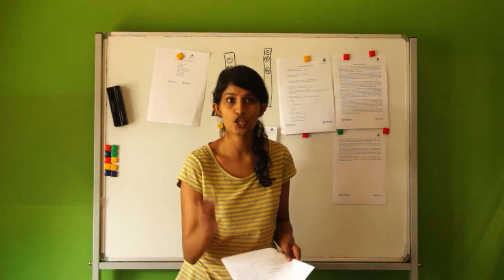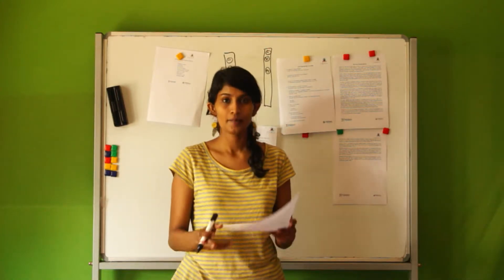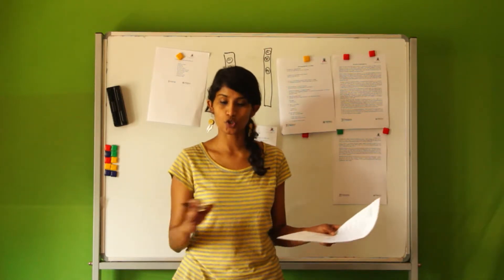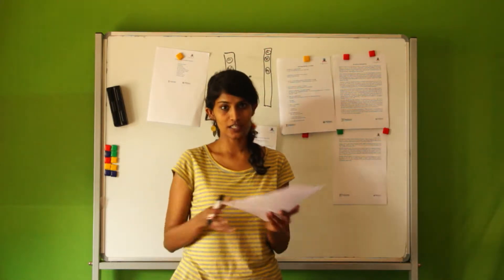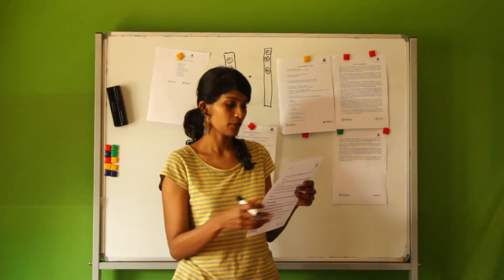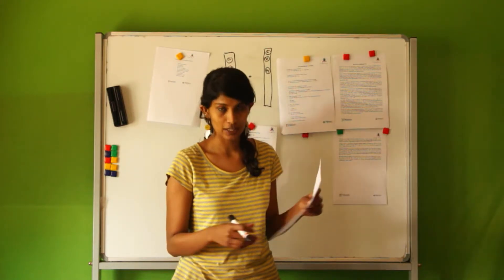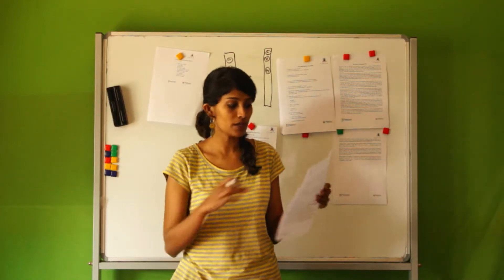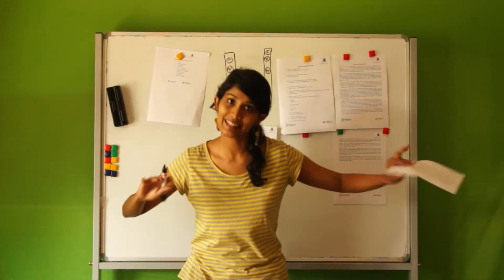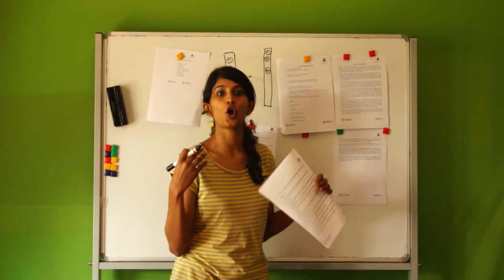The facilitator calls out a number, and both students with that number from each team come forward. They quickly read the sentence and frame a question for it. You also need to keep two blank sheets — one for each team. For example, if the statement is 'Bachendri Pal was born in 1954 at Nakuri,' the students frame a question like 'Where was Bachendri Pal born?'